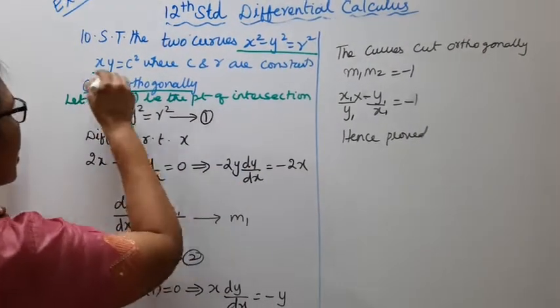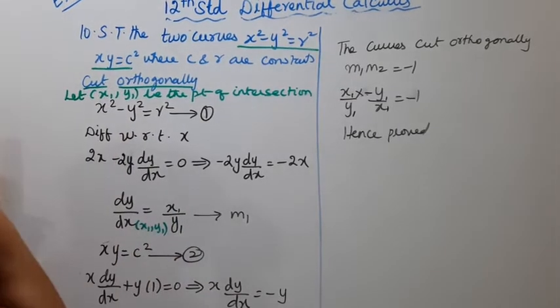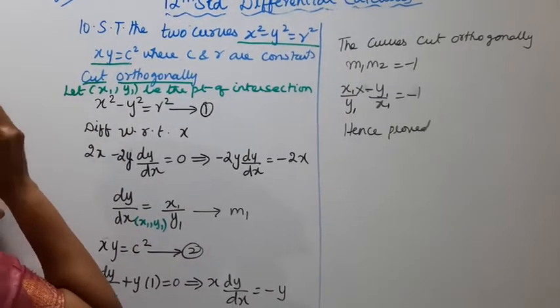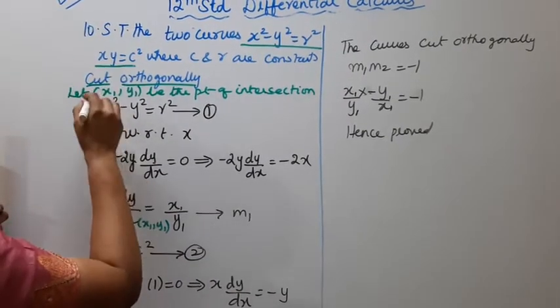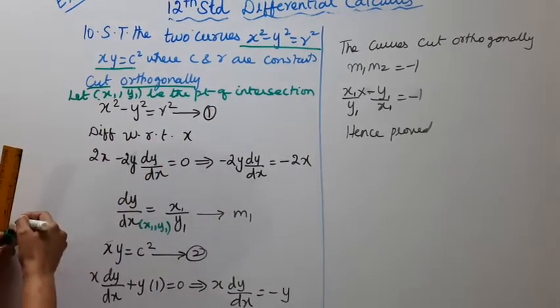These two curves cut orthogonally. Orthogonally, that is cut, then x and y will be the point of intersection.